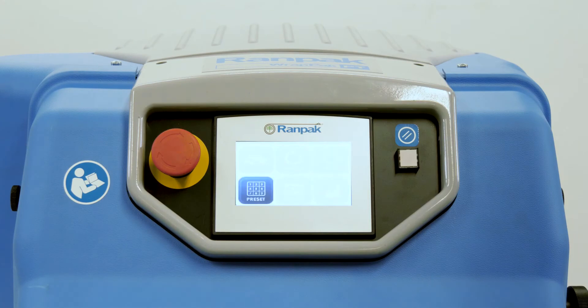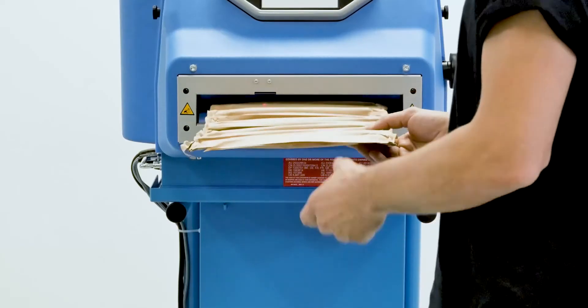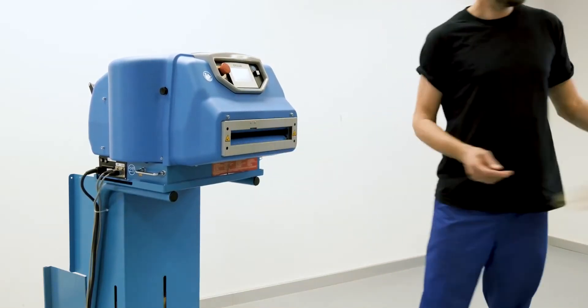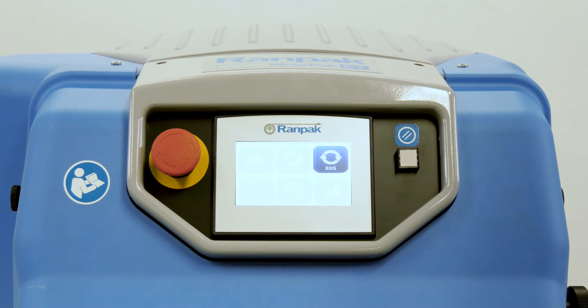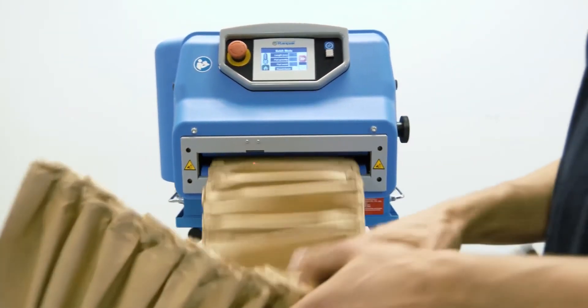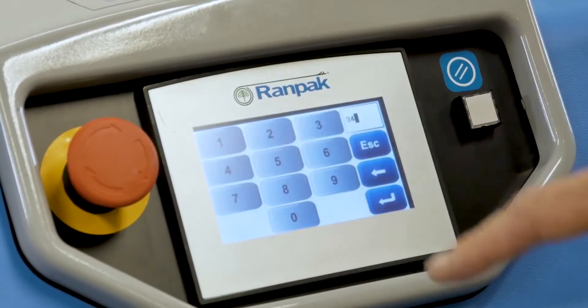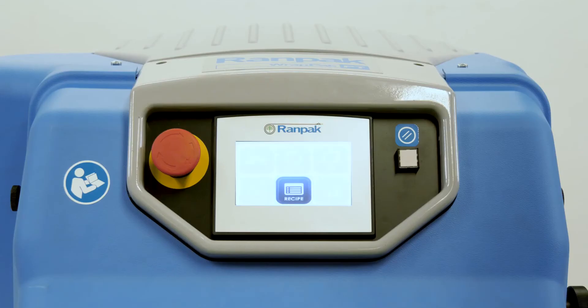The RANPAK Protector PT Converter offers multiple production modes like a foot pedal mode, batch mode, EDS mode, preset mode, and a recipe mode.